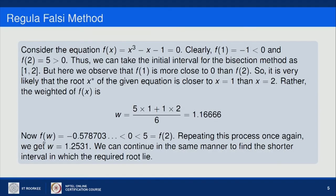Computing f(w) = f(1.16666) = −0.578703, which is negative, while f(2) is positive. So the root lies between 1.16666 and 2. Repeating this process, the next iterate w becomes 1.2531. We continue in the same manner to find the shorter interval in which the required root lies.